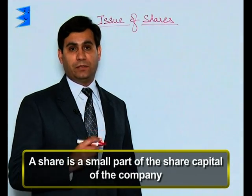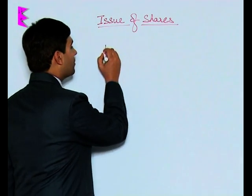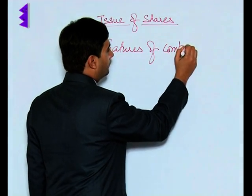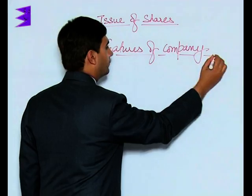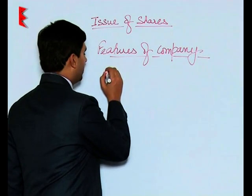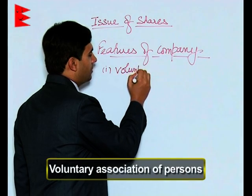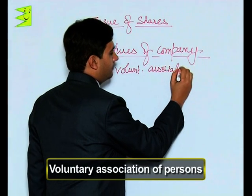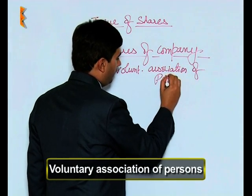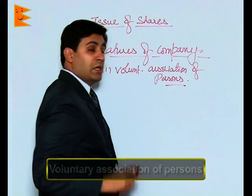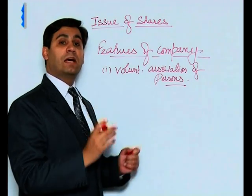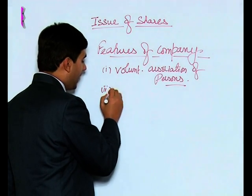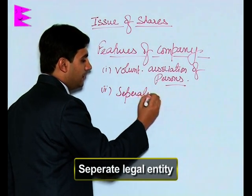Coming to the features of a company: the first one is that a company is a voluntary association of persons. The persons who have come together to form a company have done so on a voluntary basis — they have not been forced to. Then, a company has a separate legal entity.